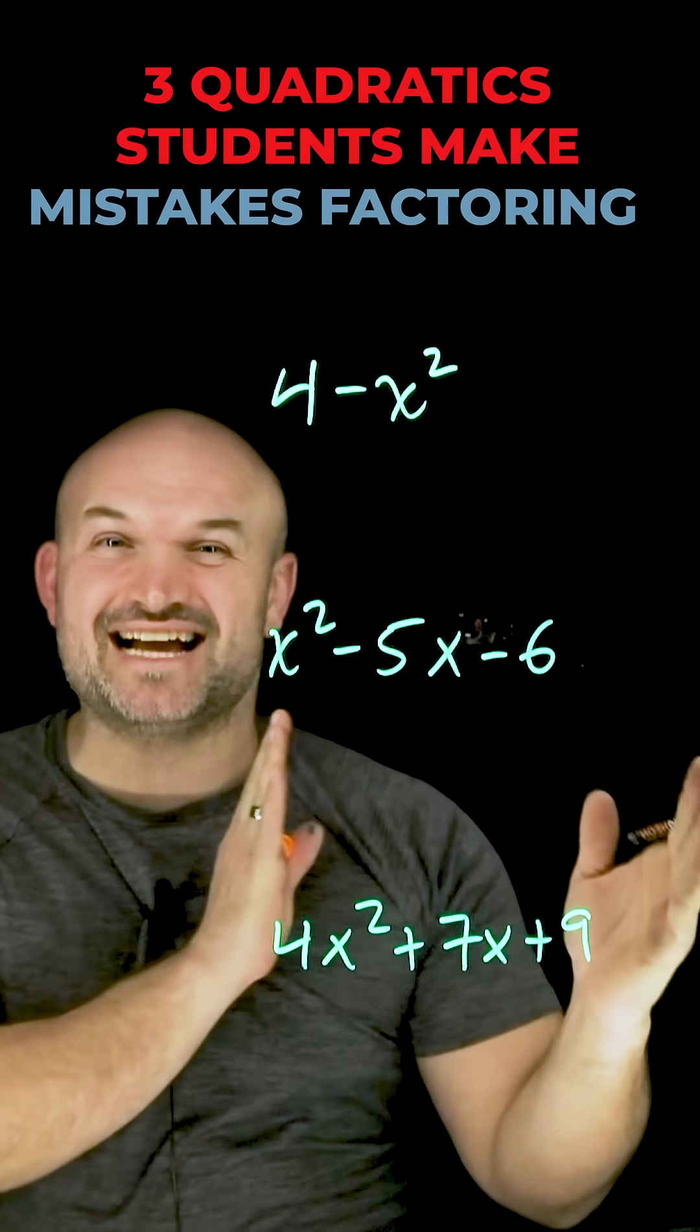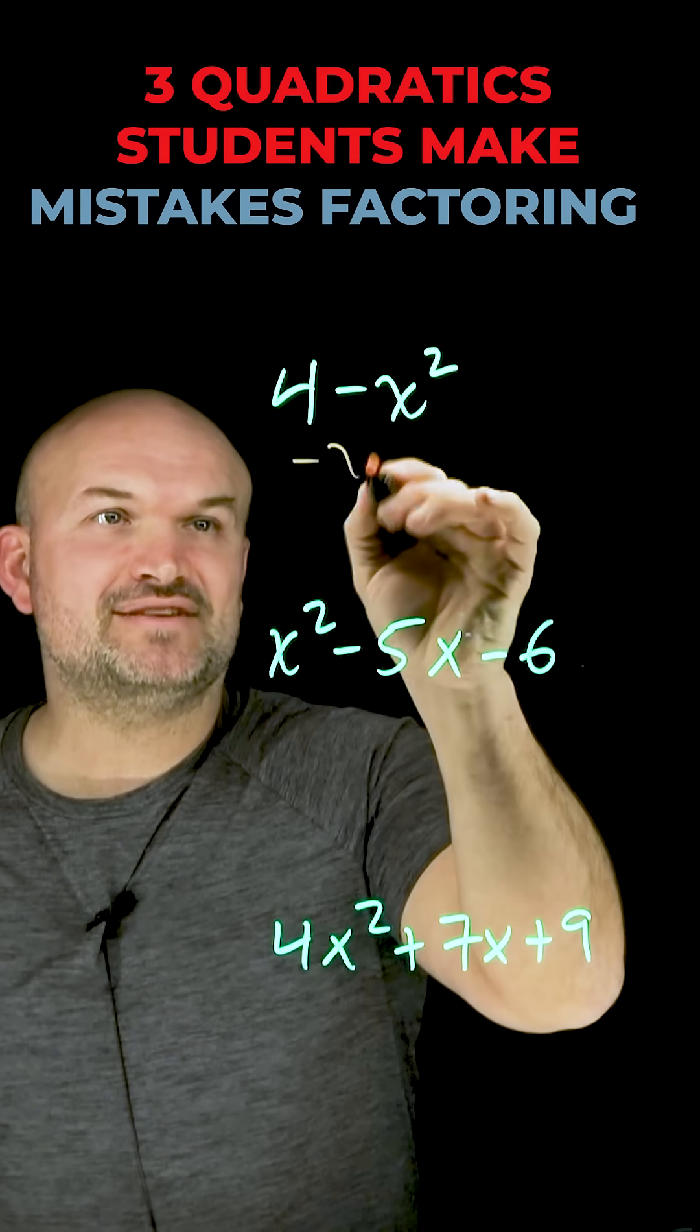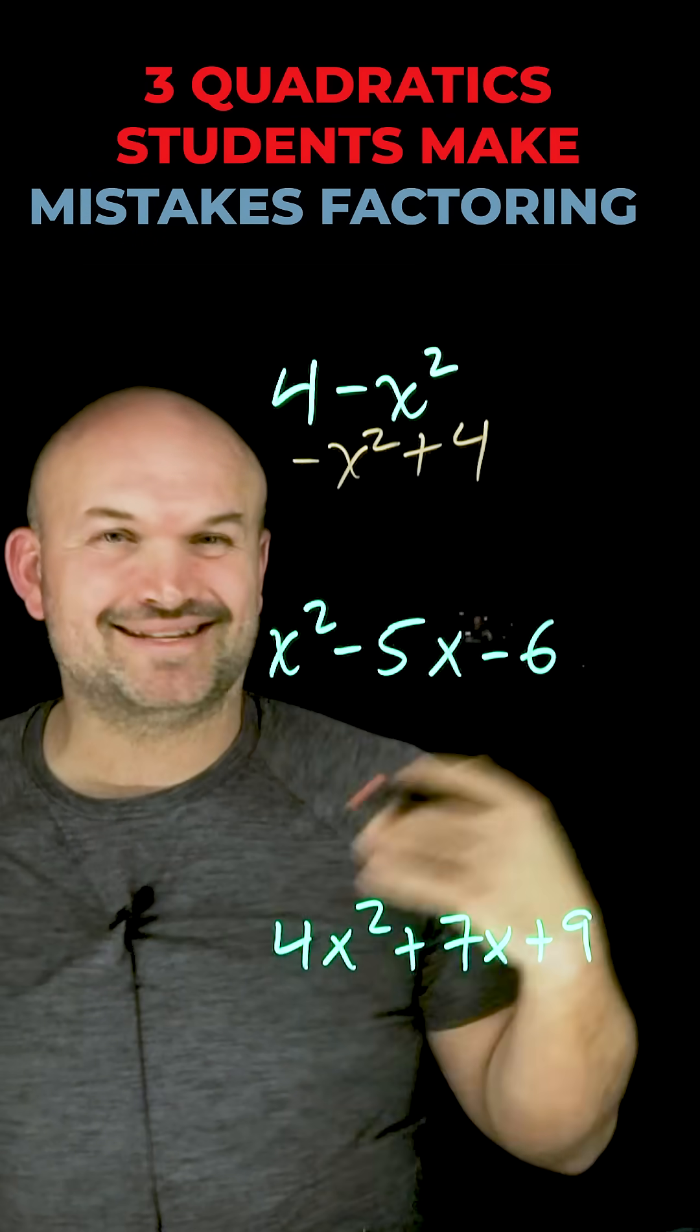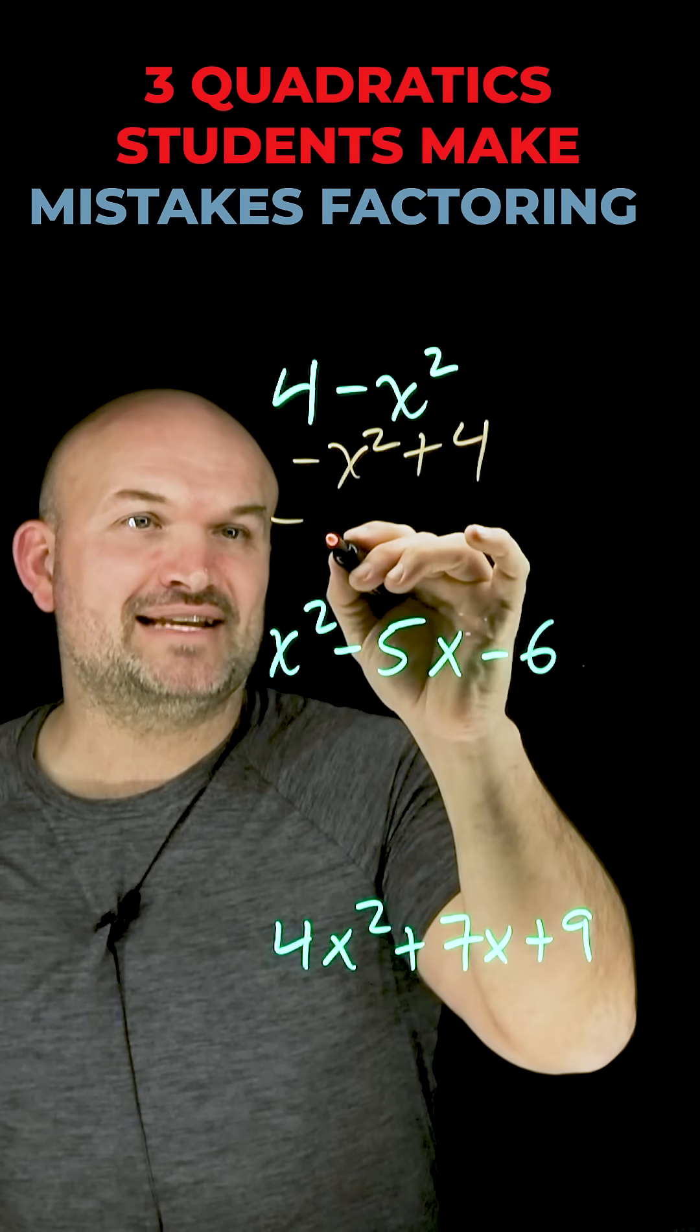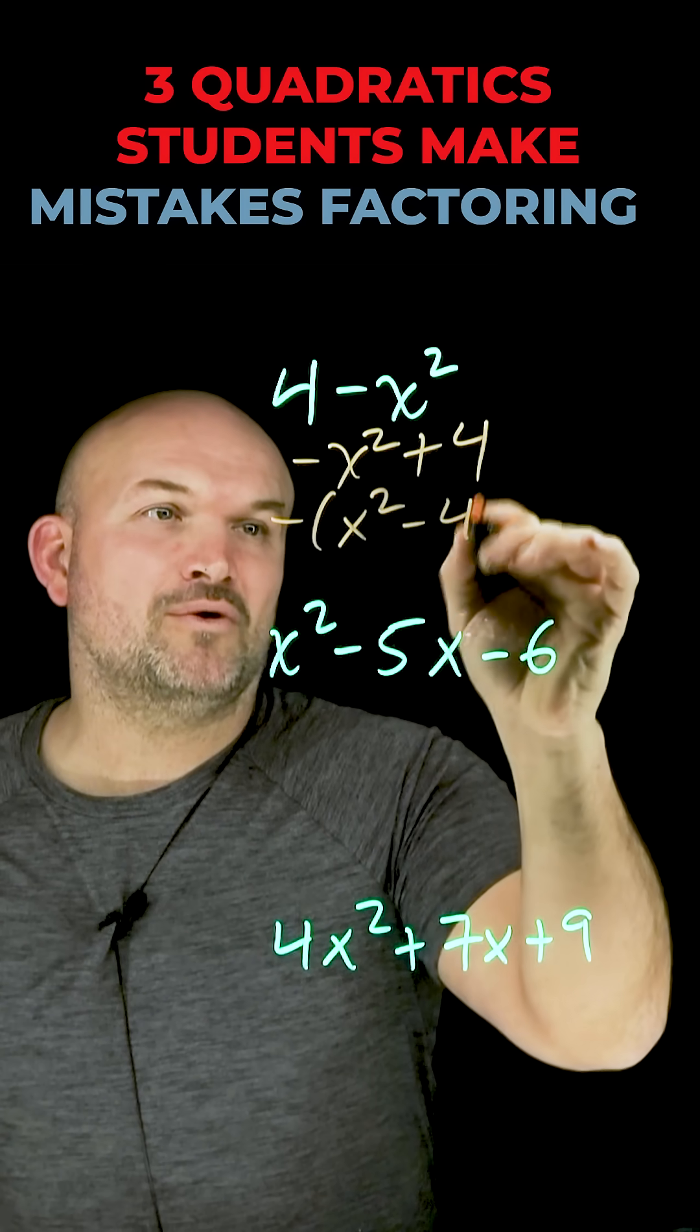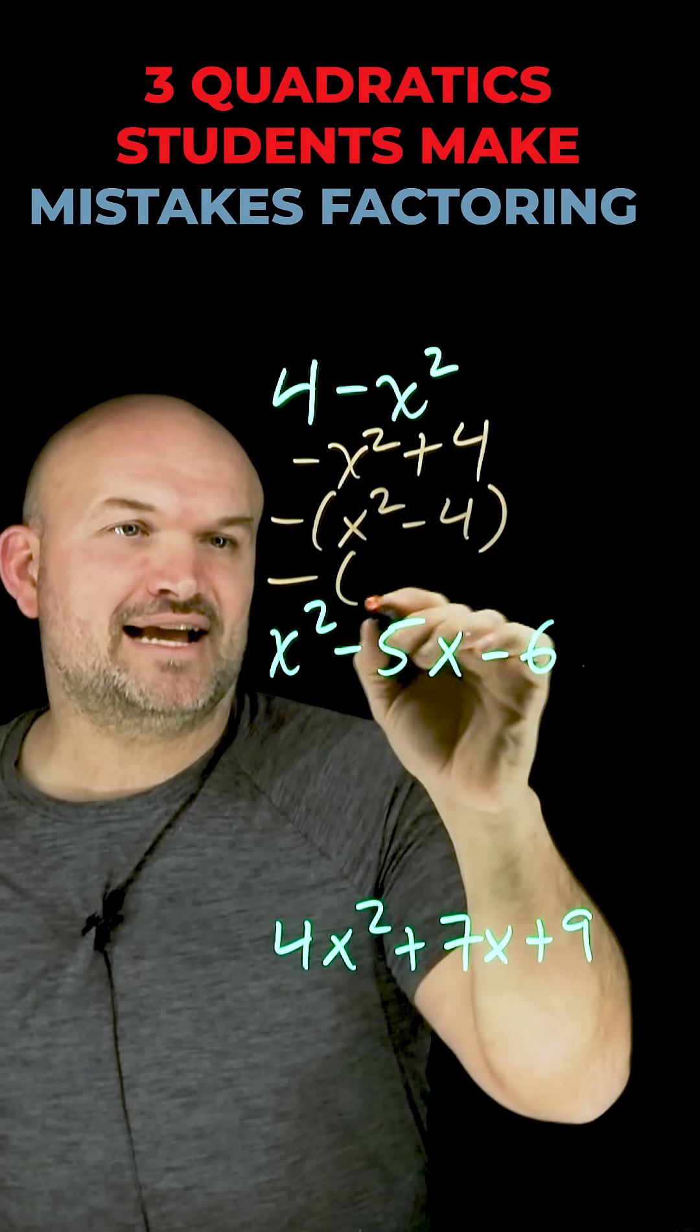The first thing you're going to want to do here is actually rearrange this so it's in the form of difference of two squares. So if I have this as negative x squared plus 4, it's no longer a difference of two squares. But if I factor out the negative, I now have negative x squared minus 4. Now it's written as a difference of two squares, and now I can factor this as negative x minus 2 times x plus 2.